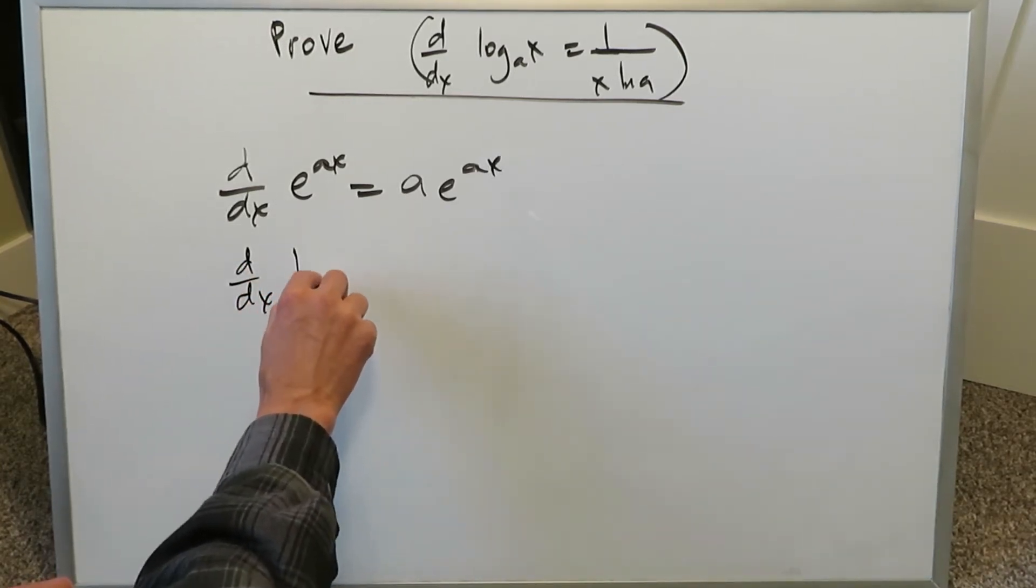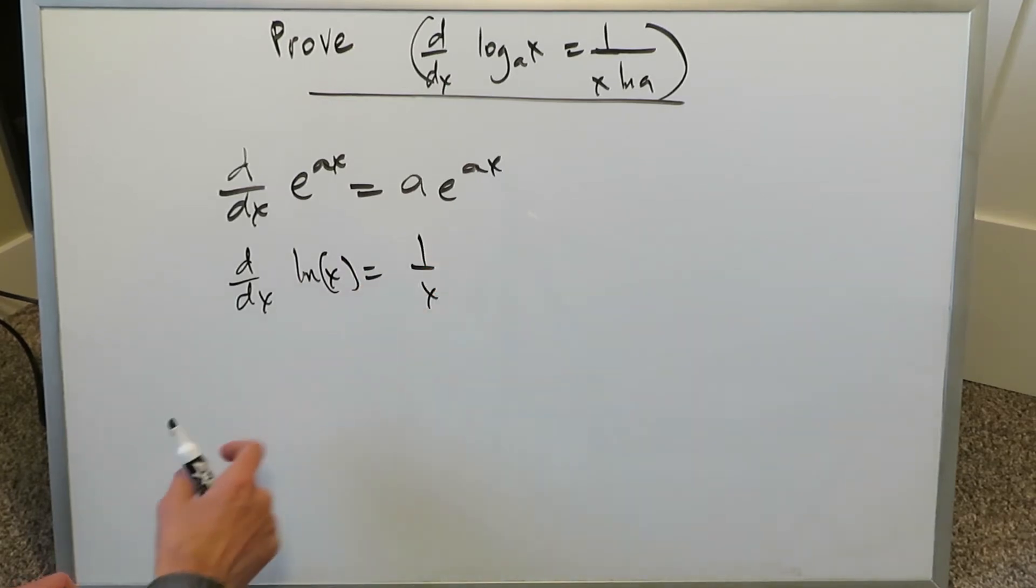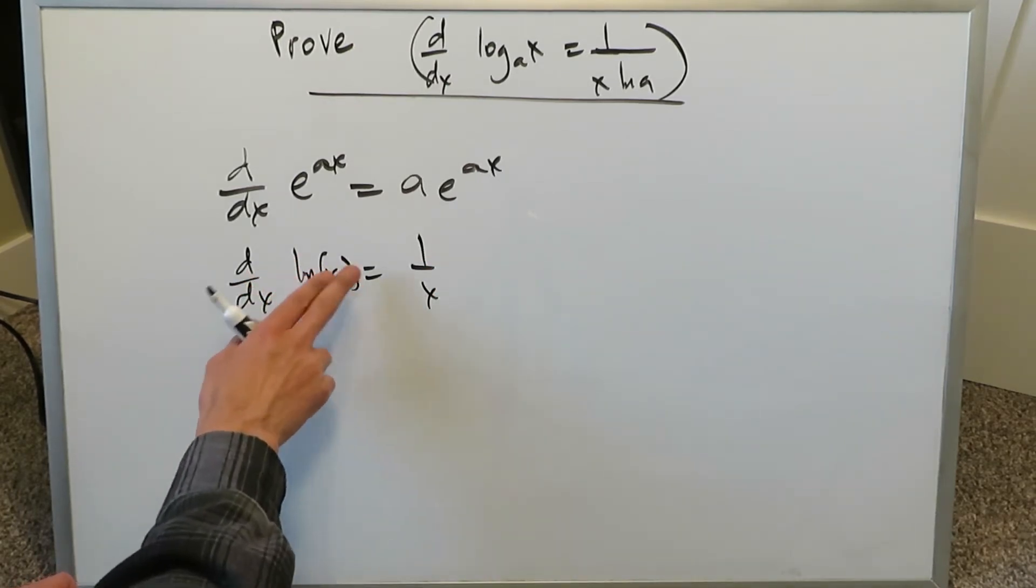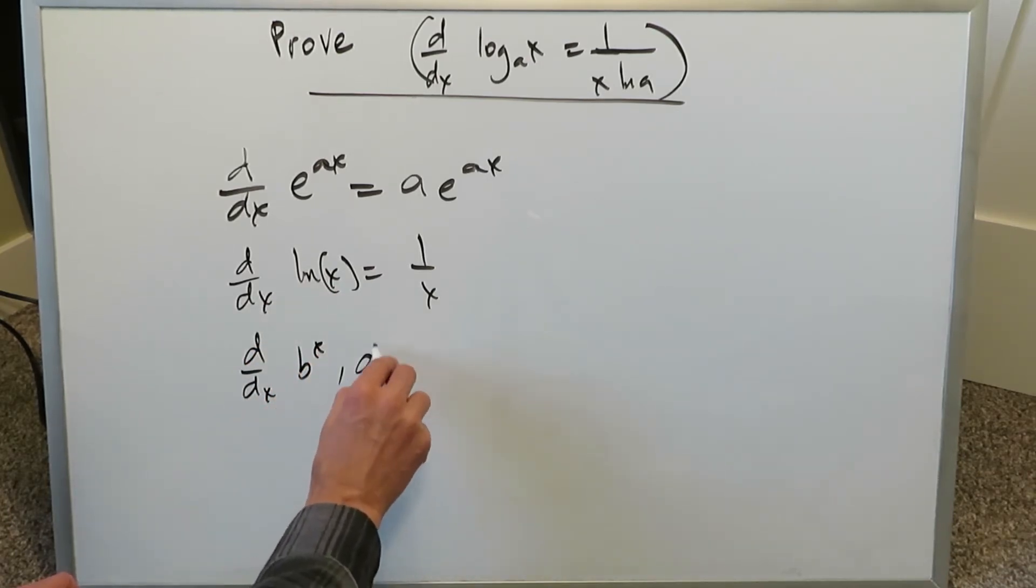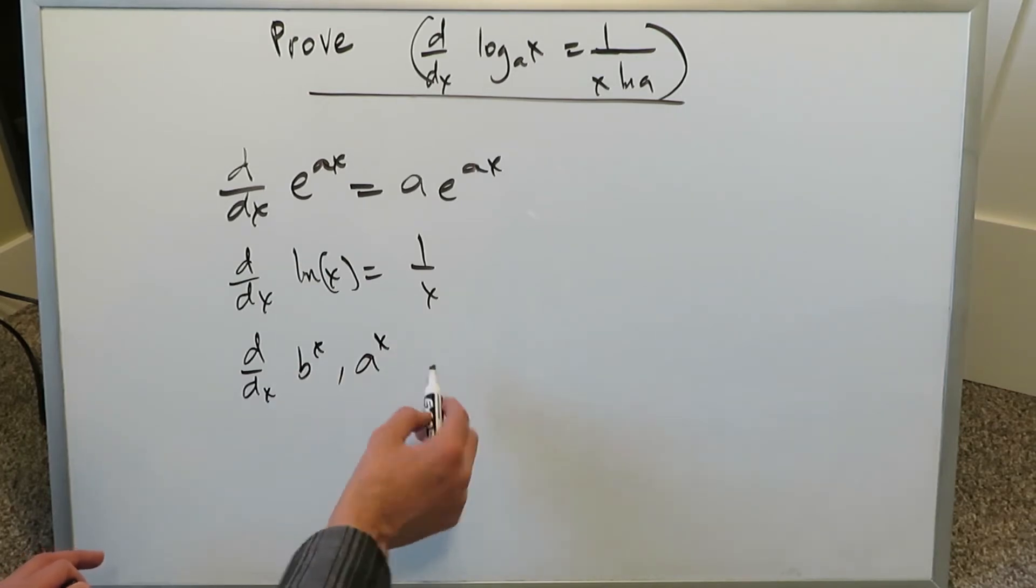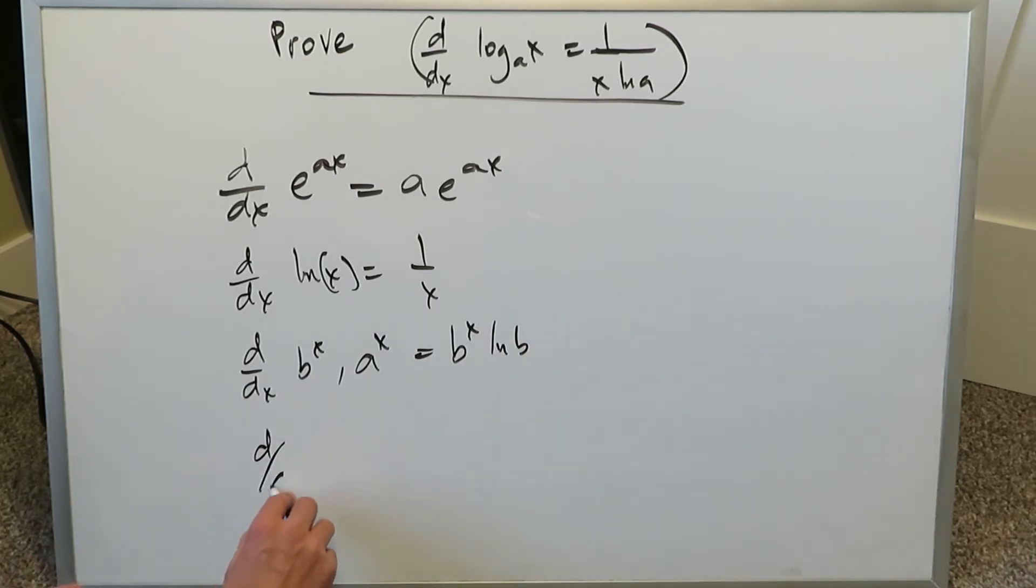We know d/dx ln x is equal to 1 over x. This ideally is an absolute value because you don't do a natural log of a negative number. You know d/dx power function b^x, which is sometimes also a^x, is always equal to b^x ln b or you could have said a^x ln a. And then lastly this one right here which we have on the very top, log base a x is equal to 1 over x ln a.